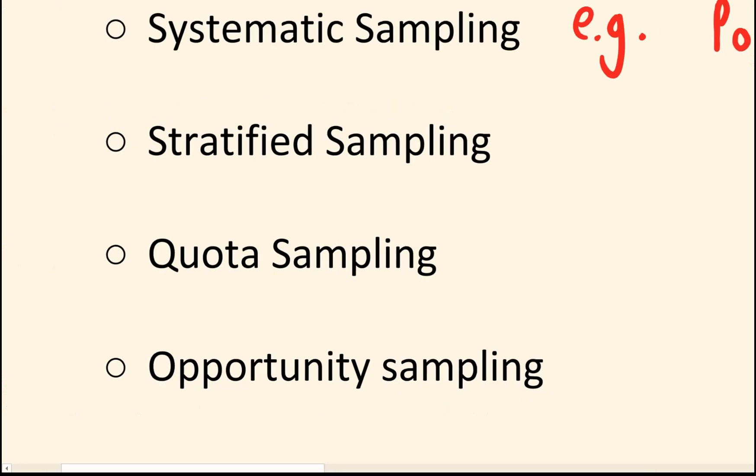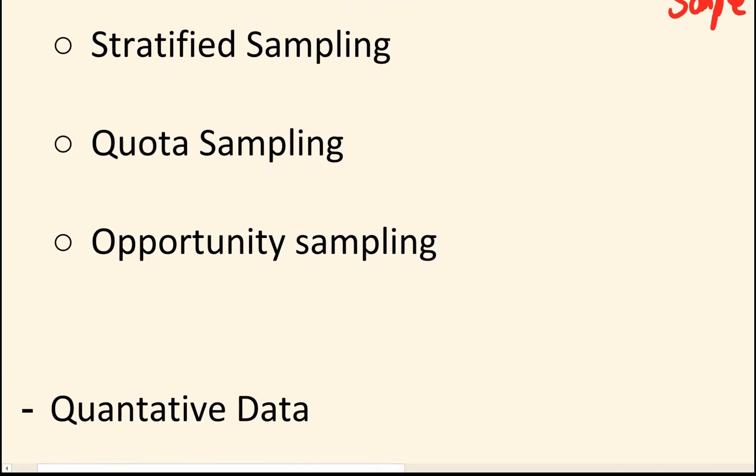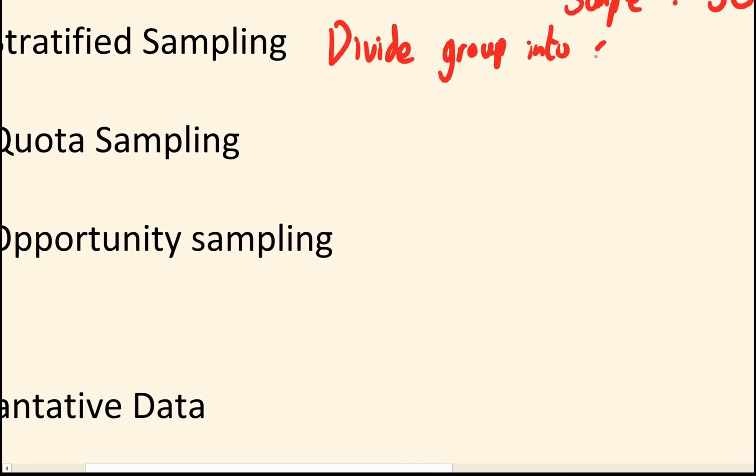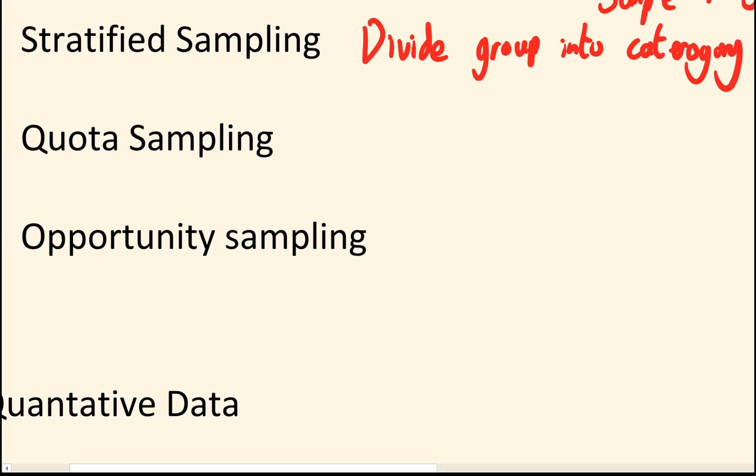Next we have stratified sampling. So this works when you can neatly divide your group into nice categories. So the example you often have is gender, which now isn't entirely true and also like year groups at school. So we can divide our group into categories and we're going to make sure that people we sample from each category represents the whole population.